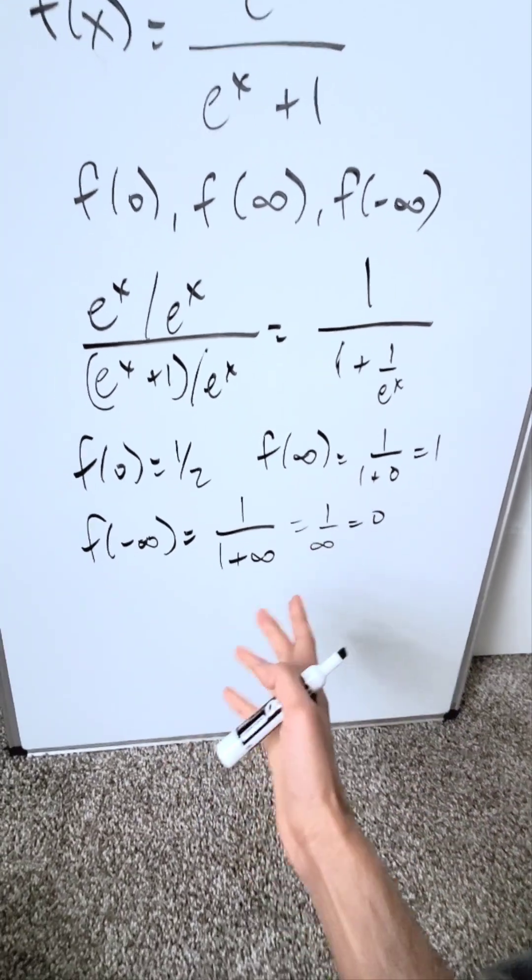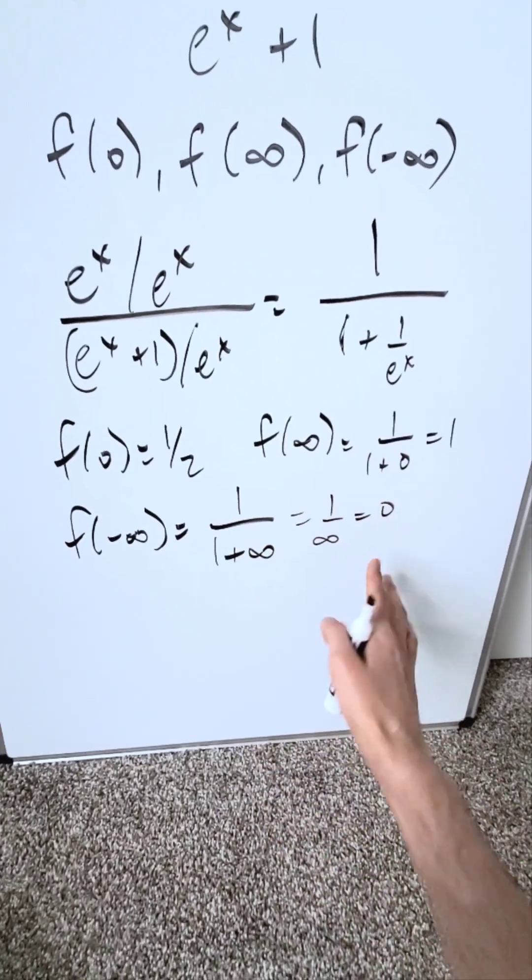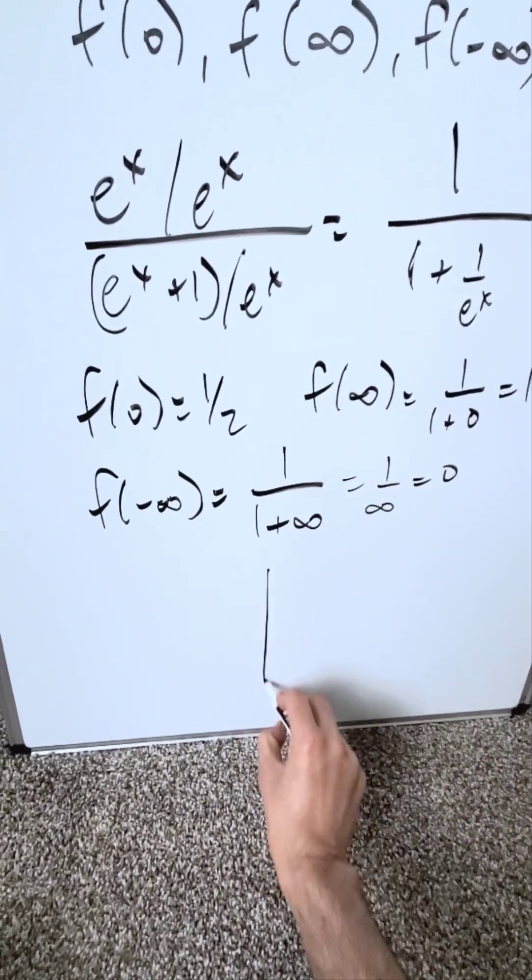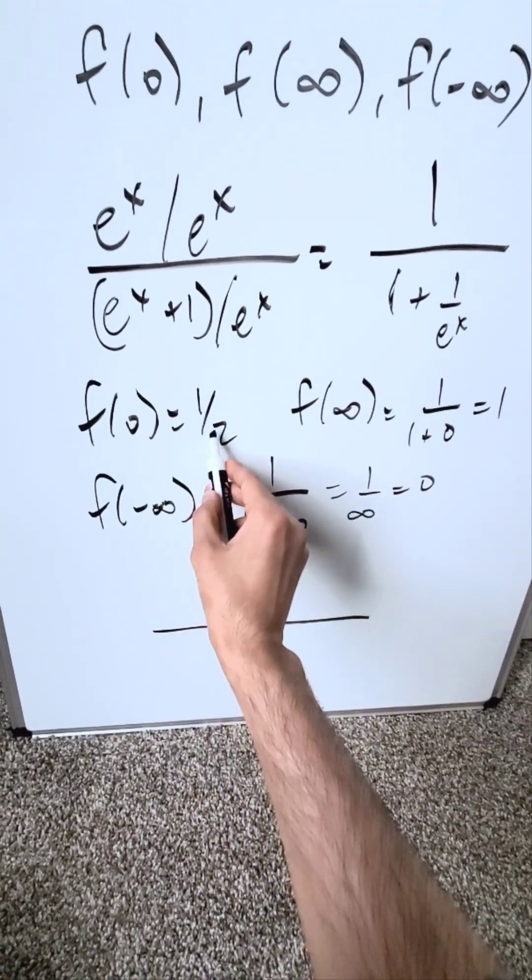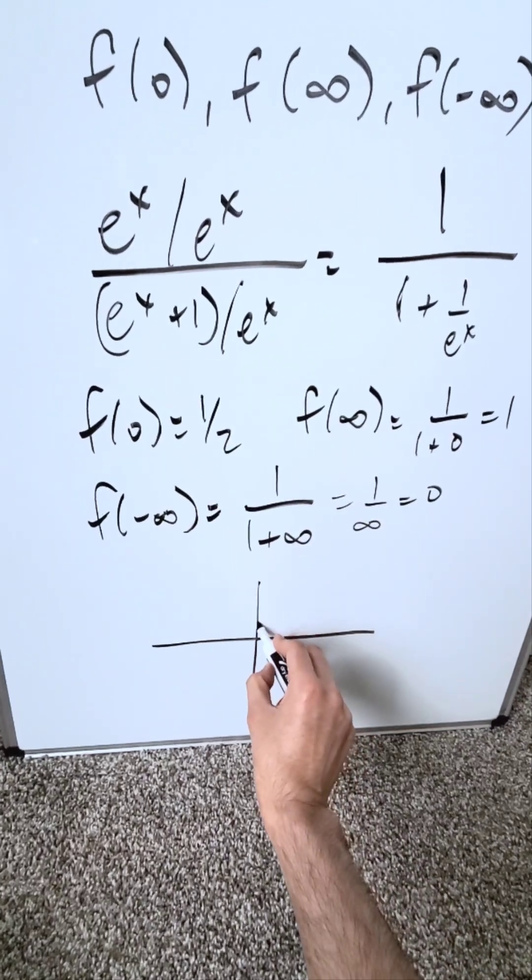I have my items. Now the beauty of this is you can actually use these to plot your graph. When I'm looking at f of 0, that was giving me my y-intercept, 0 comma 1 over 2.